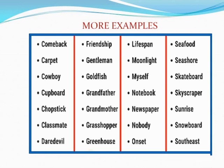Here are examples of compound words with mixed combinations — Noun plus Noun, Noun plus Verb, Verb plus Noun, and Adjective plus Noun: Carpet, Cowboy, Cobalt, Chopstick, Classmate, Daredevil, Friendship, Gentleman, Goldfish, Grandfather, Grandmother, Grasshopper, Greenhouse, Lifespan, Moonlight, Myself, Notebook, Newspaper, Nobody, Onset, Seafood, Seashore, Skateboard, Skyscraper, Sunrise, Snowboard, Southeast.